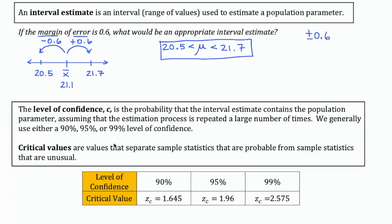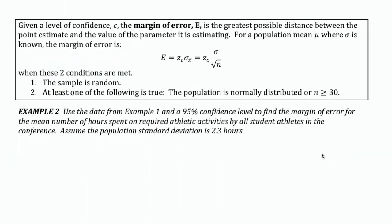But how do we determine this margin of error number based on our data sample? To do that, we're going to talk about level of confidence. The level of confidence is the probability that the interval estimate will contain the population parameter, assuming that the estimation process is repeated a large number of times. We generally use either a 90%, 95%, or 99% level of confidence. Each of these levels of confidence has an associated critical value, which separates sample statistics that are probable from those that are improbable or unusual.